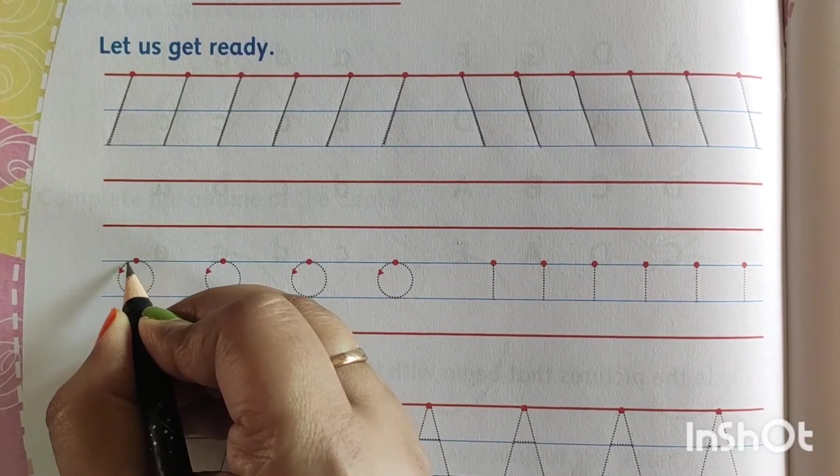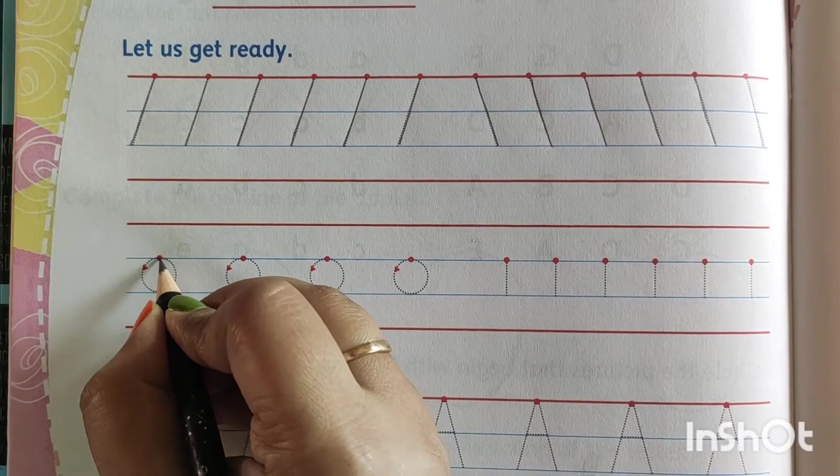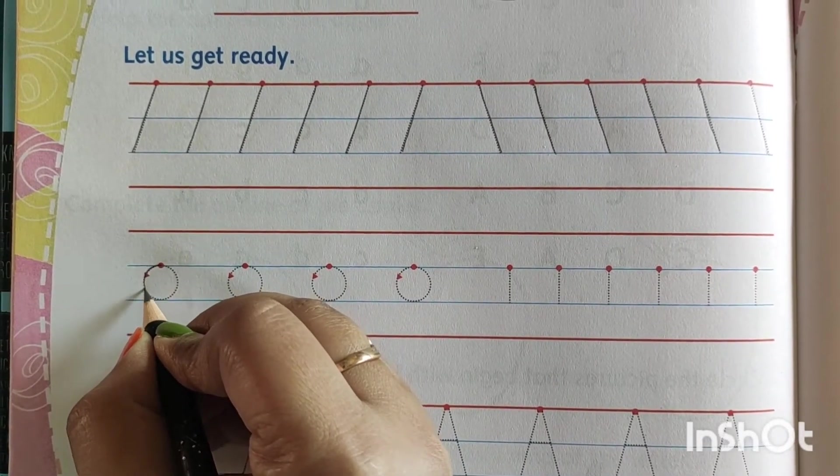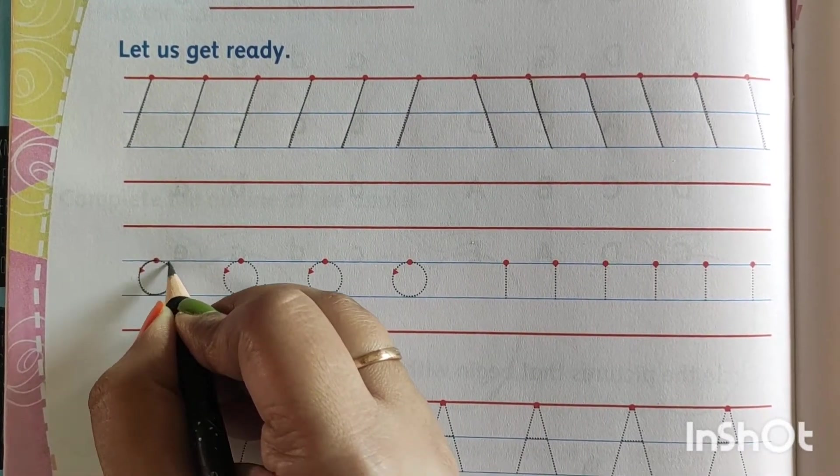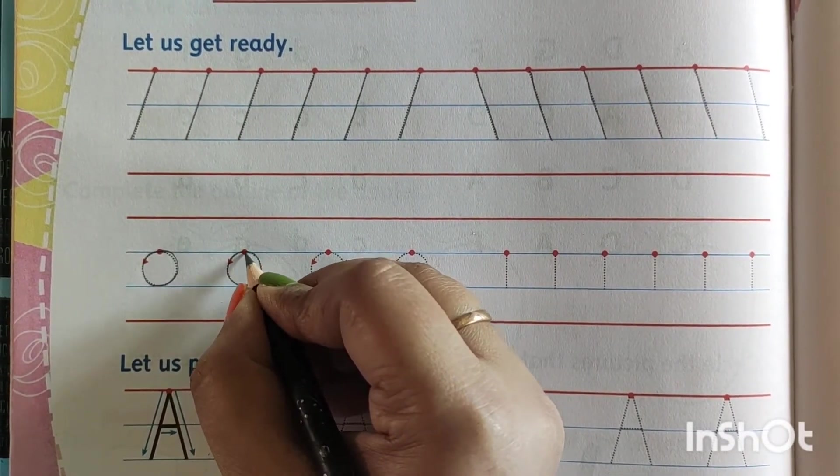No. The arrow is indicating that left side. From the left side we have to make the circle. So from here I am starting.